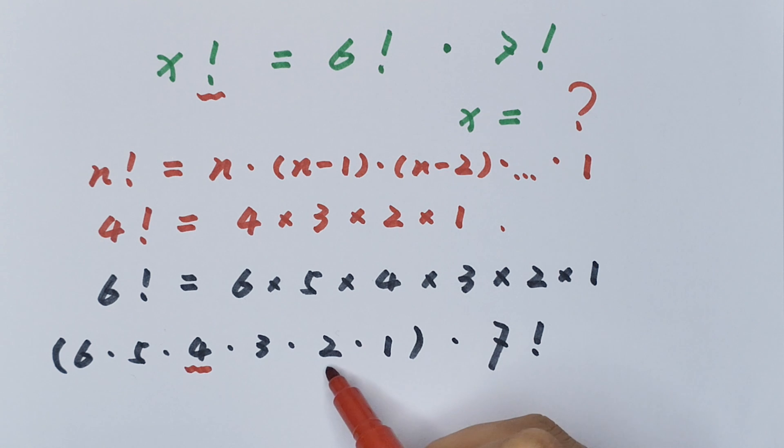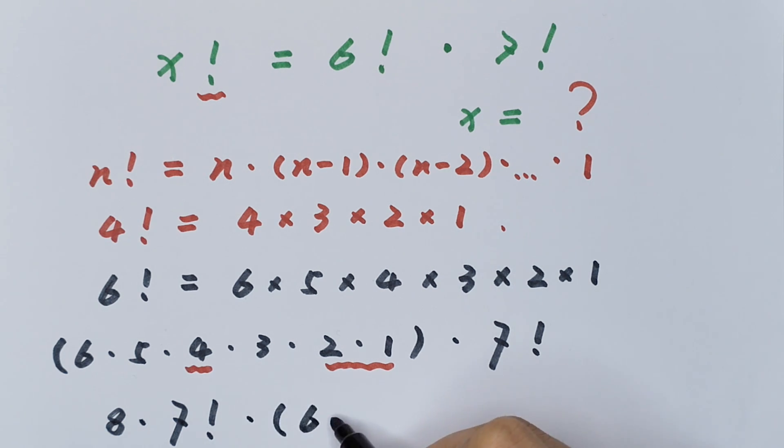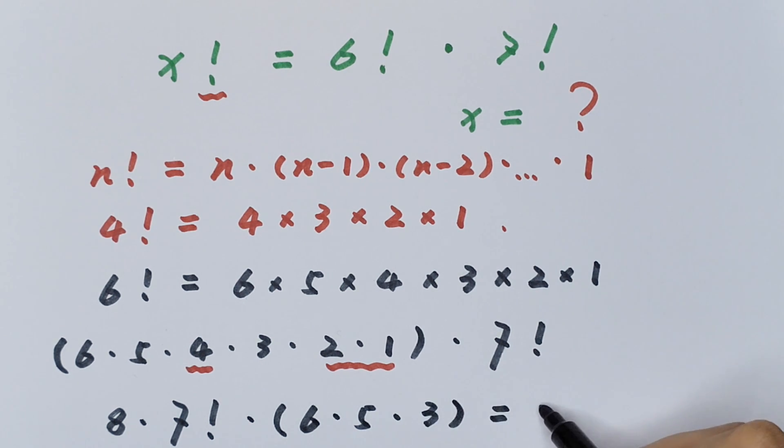4 times 2 times 1 equals 8. We take 8 out of the bracket times 7 factorial, then times 6 times 5 times 3 equals x factorial.